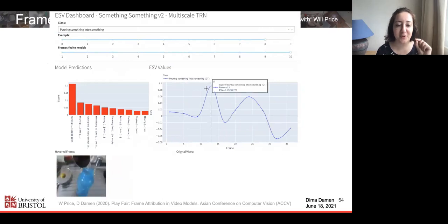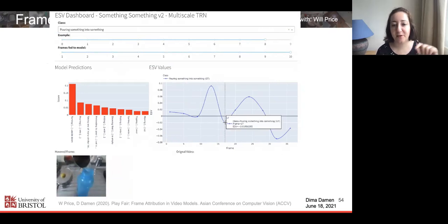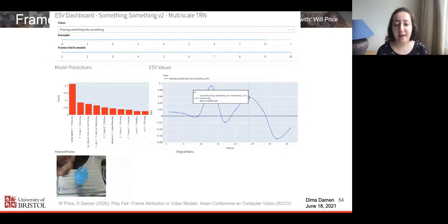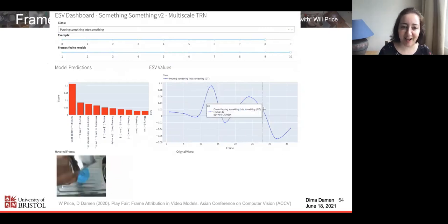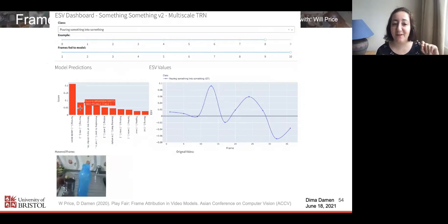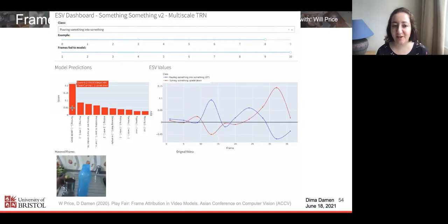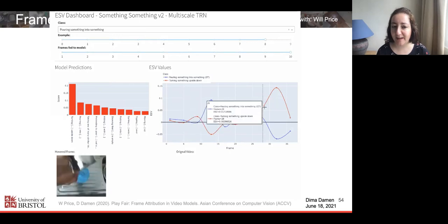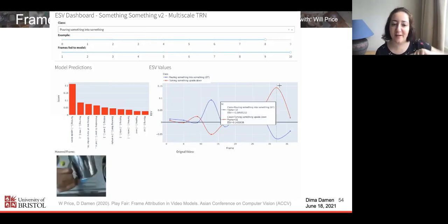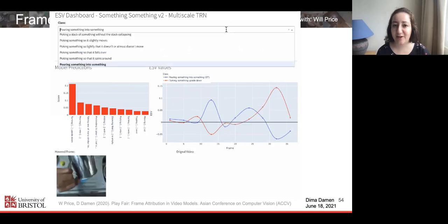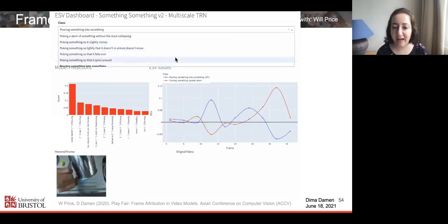You can look at errors. This is from the same class and you can see the person pouring and the frames contributing. But in fact, this is the second highest class. The video is incorrectly labeled as turning something upside down. By playing with the dashboard, you can look at the end of the video. In fact, at the end, the person had turned the cup all the way upside down. That's why the video is incorrectly labeled as turning something upside down. It gives you a very good understanding of models, their successes and their failures. There is code if you want to test your own model and on another dataset.